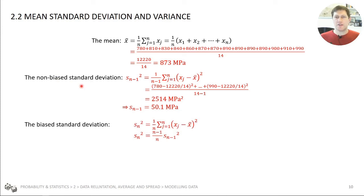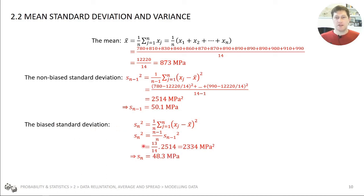The biased standard deviation S_n divides by n (total number of data points), while the non-biased divides by n minus 1. The two are related by the ratio (n−1)/n. The biased standard deviation comes out at 48.3 MPa, a little less than the non-biased 50.1. You need to appreciate that there are two definitions of standard deviation and decide which is appropriate for each instance.